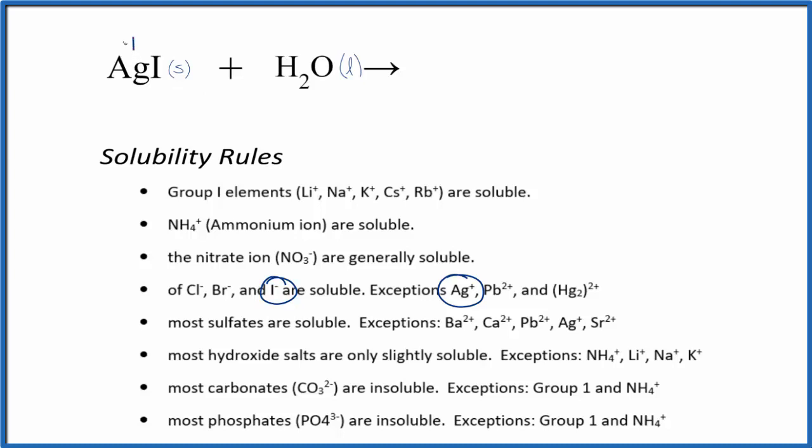Silver, that's one plus, and the iodide ion, one minus. So we could write Ag plus, that's the silver ion, plus we have that iodide ion, I minus.